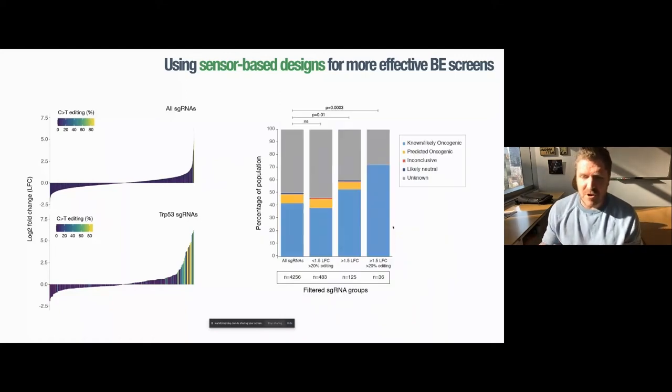When you categorize this using the OncoKB classifier from MSKCC, you see that when we start with the guide RNAs, we have a number of known or predicted oncogenic mutations. After the screen is complete, those that don't show enrichment see a slight decrease in the known and oncogenic prediction criteria. The ones that do show log fold enrichment have a slight enrichment of those known or oncogenic predicted mutations. But if you incorporate both the editing level and the log fold change, you get a much more dramatic enrichment. And more than 70% of these mutations are either already known or predicted to be oncogenic.